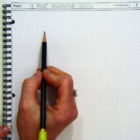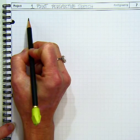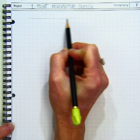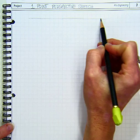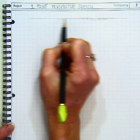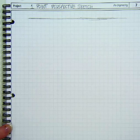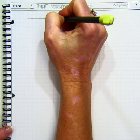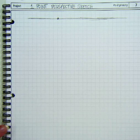The first part to a one-point perspective sketch is to draw in a horizon line. So I'm lightly following the grid lines and making a horizon line. And then I need to pick somewhere on the horizon line to be my vanishing point.